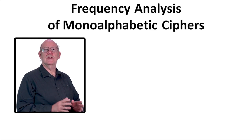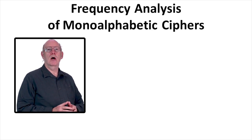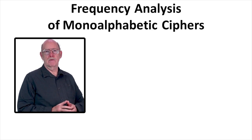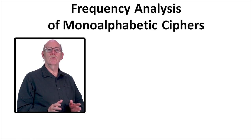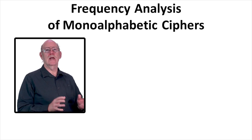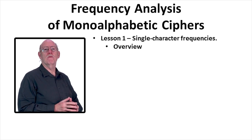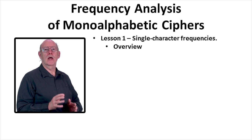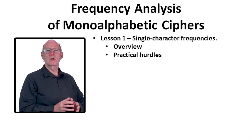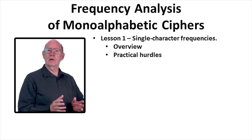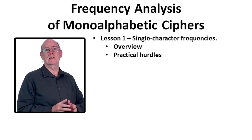Over the next few lessons, we're going to examine the use of frequency analysis to cryptanalyze monoalphabetic ciphers, but our primary aim is to start understanding the broader context in which randomness and cryptosystem security is related. We'll begin with an overview of the underlying reasons why frequency analysis works for these ciphers, but we'll also look at some of the practical realities that complicate even the straightforward cryptanalytic techniques.